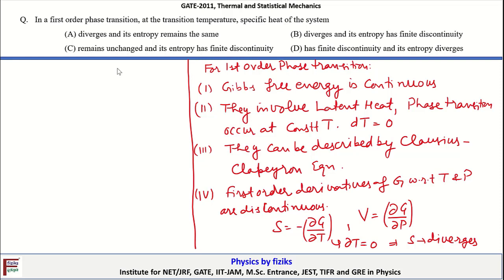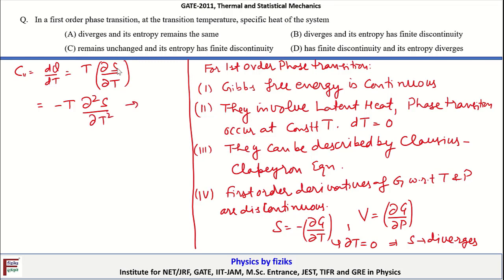The specific heat C = dQ/dT = T·dS/dT. Since S = -dG/dT, this can be rewritten as C = -T·(d²G/dT²). Because entropy S is discontinuous and dT = 0 at the transition, the specific heat diverges at the transition point.